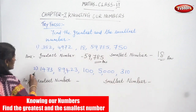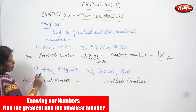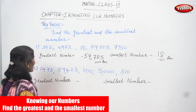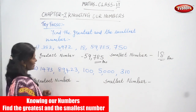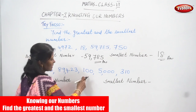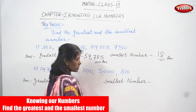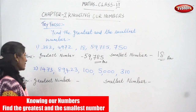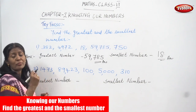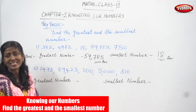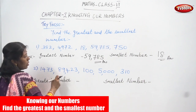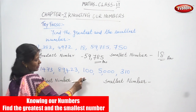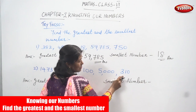Next one is the second question. Five numbers are given again. First number is 1,473. Second number is 89,423. Third number is 100, fourth number is 5,000, and the last number is 310. So, you have to find the greatest and the smallest number. The number of digits: first number is 4 digits, second number is 5 digits, third number is 3 digits, fourth number is 4 digits, and the last number is 3 digits.